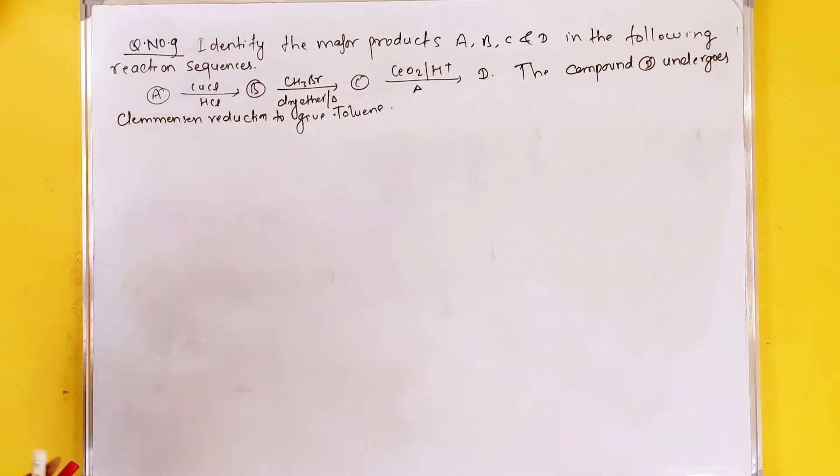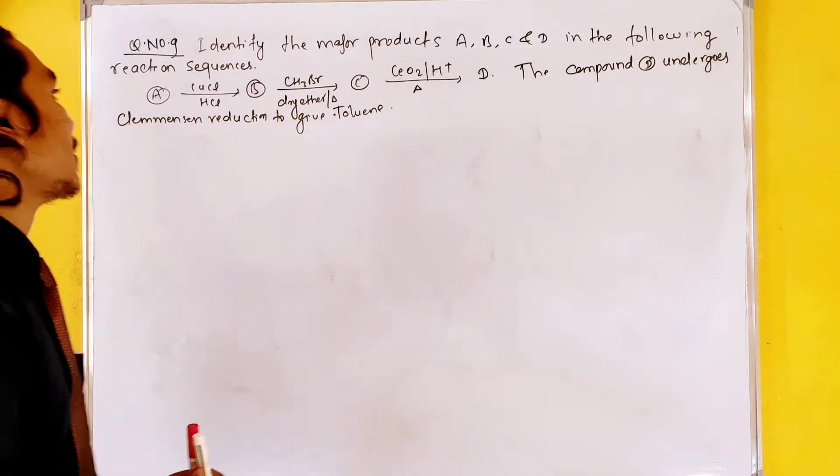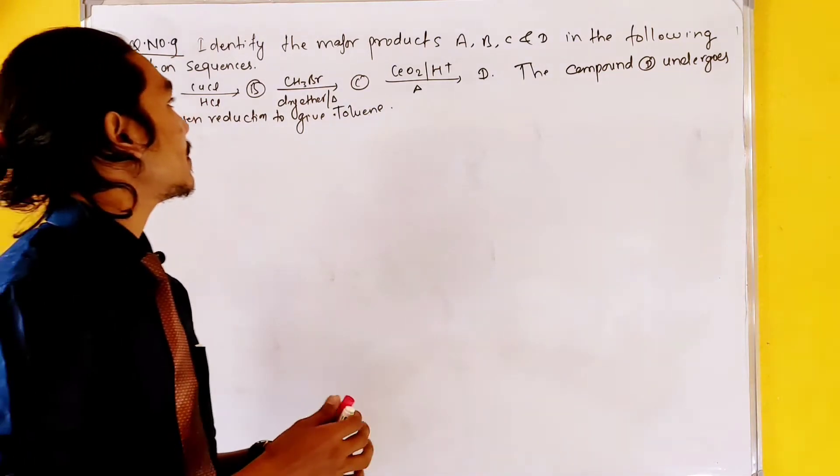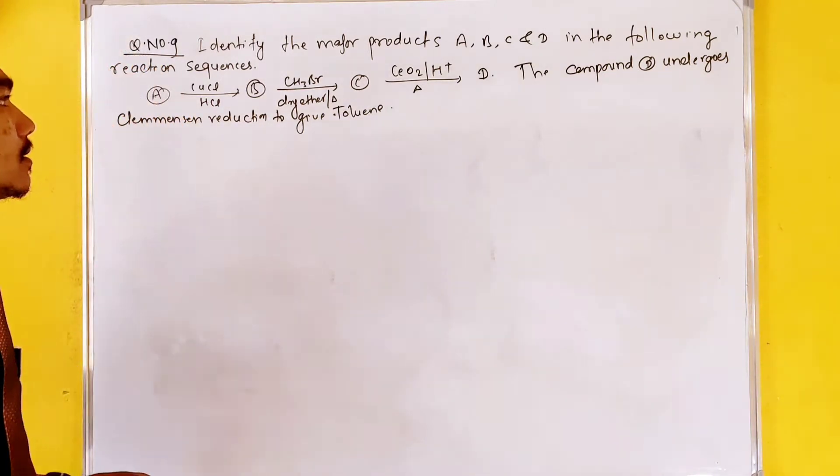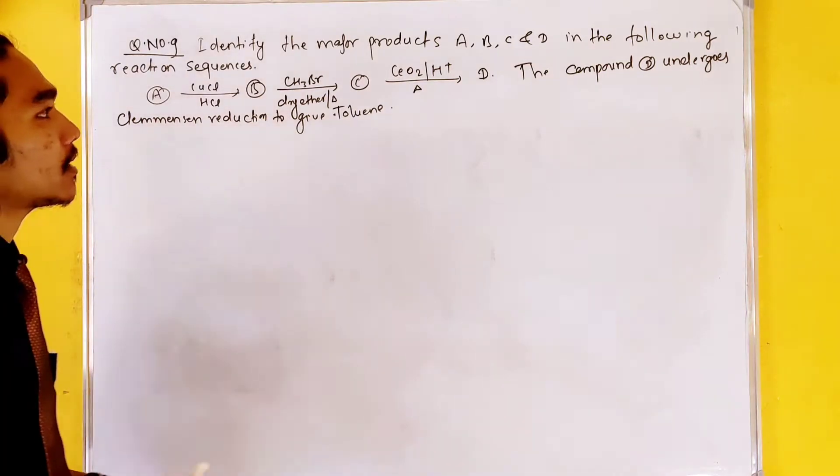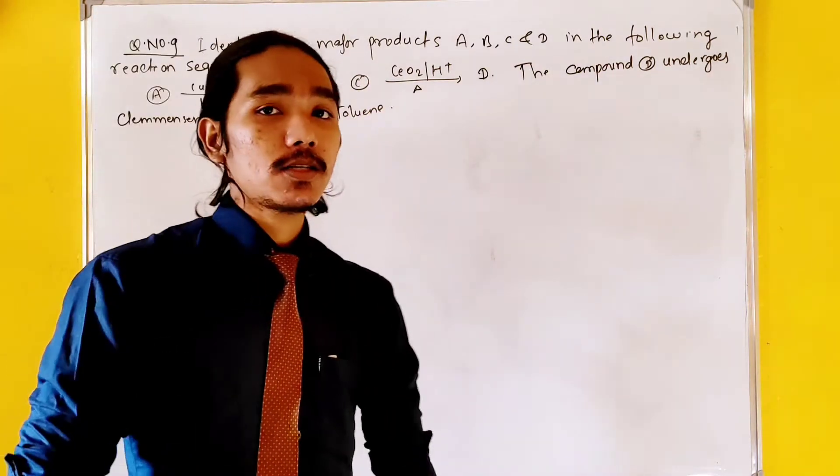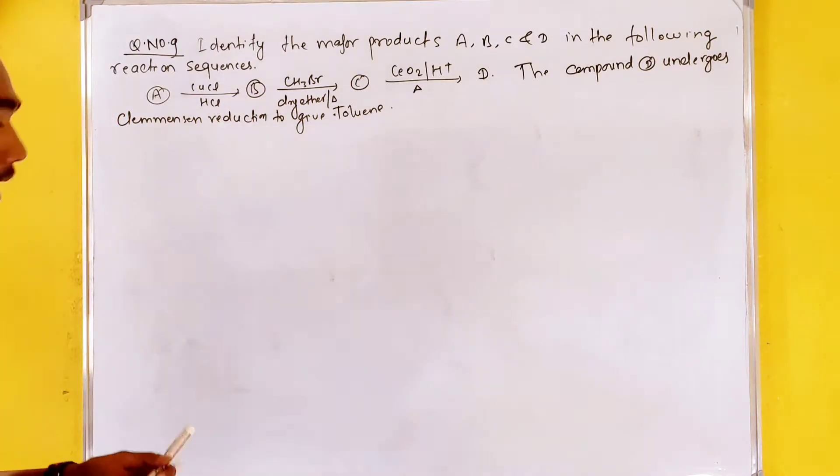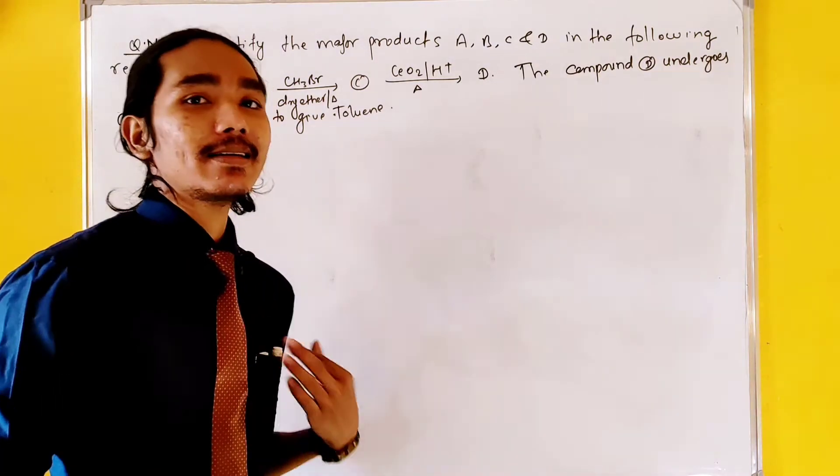In this topic, we have compound A and B formation. We have copper chloride and HCl. Then we will have CH3Br with dry ether and we will have oxidation. We will have compound D formation. In this class, we will have a reaction process.